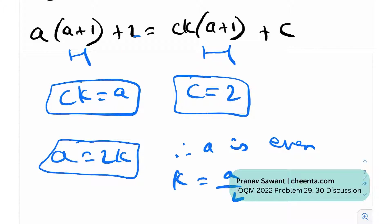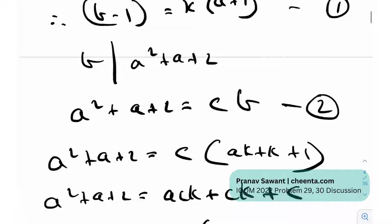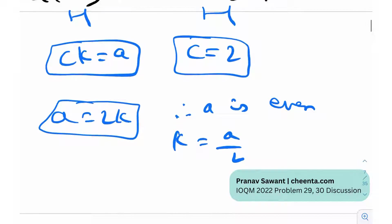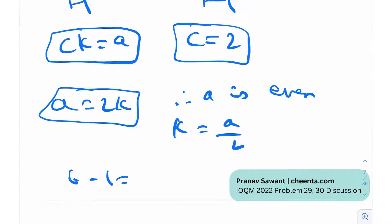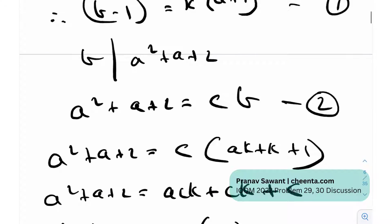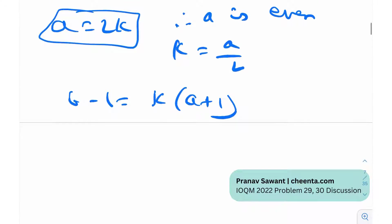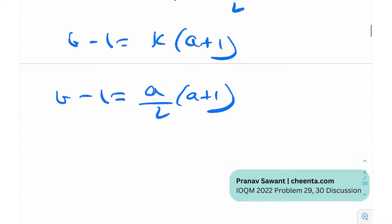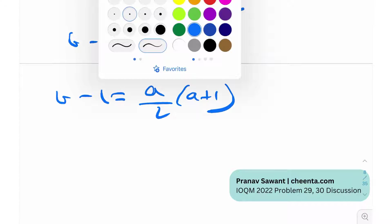So now b-1, what we initially written was K times (A+1), right from equation number 1. B-1 was K times (A+1), and so I can write b-1 is A/2 times (A+1). Now comes in the fact that b is a three digit number.